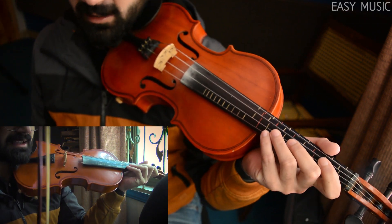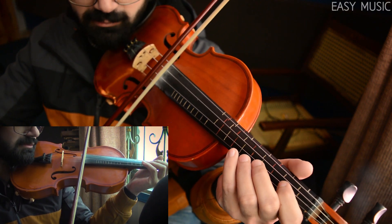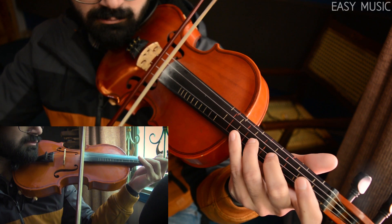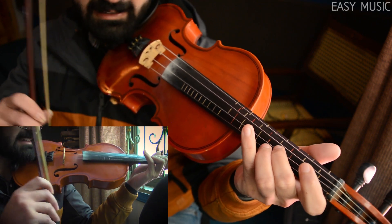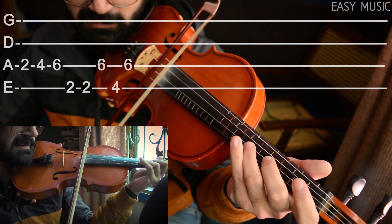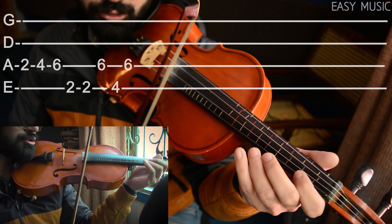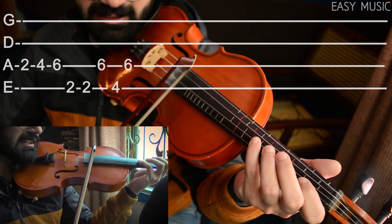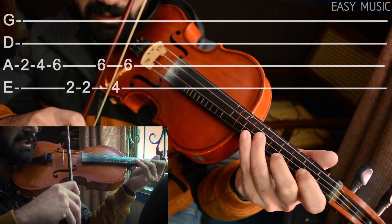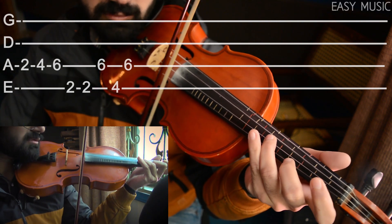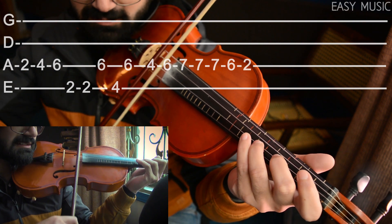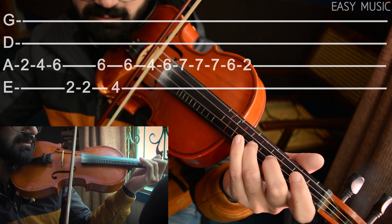And now the next part. So how you're gonna play this one is again the same thing, so starting from second fret on A string, fourth, sixth, and then second fret on E two times and then against sixth fret on A, fourth fret on E, sixth fret on A. And then fourth fret on A, sixth, seventh, sixth, second.